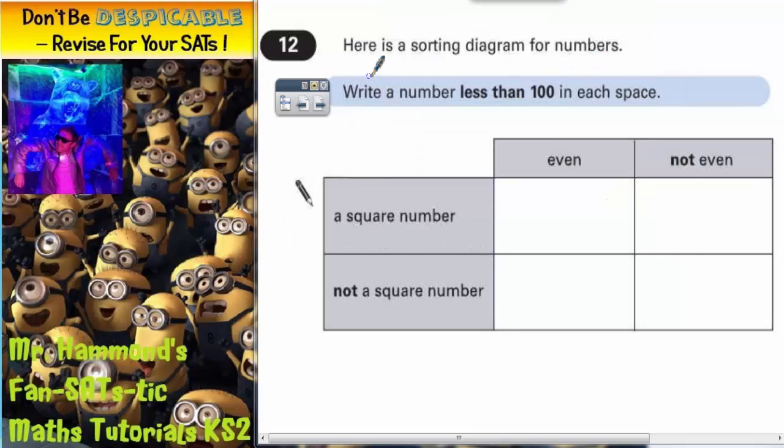Question 12, here is a sorting diagram for numbers. Write a number less than 100 in each space. So we've got square numbers, not square numbers, even numbers and not even numbers. They've got to be less than 100.